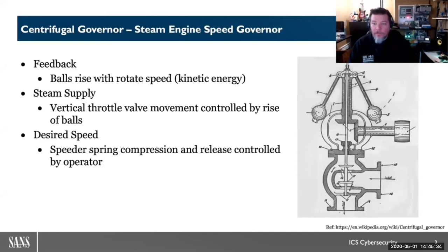This began essentially in a mechanical measures through a speed governor, as shown in the display. We have a rotating shaft — in this case directly off the steam engine. As it rotates, it spins weighted balls at the top, causing them to increase or decrease in height through centrifugal energy. As those balls increase in height, they push down on a valve controlling the steam supply into the engine. The rotation speed self-governs the amount of steam entering. The operator sets the desired speed through a speeder spring via compression or release.